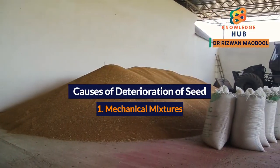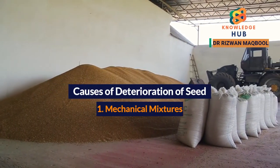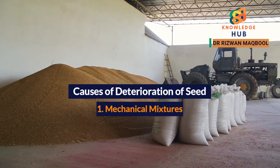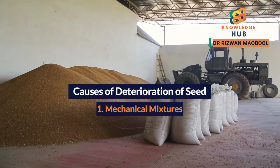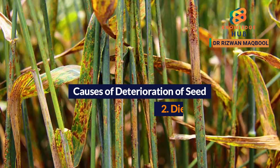Usually, the seed produce of all the varieties is kept on the same threshing floor, resulting in many varietal mixtures. Combining or threshing equipment is often contaminated with seeds of other varieties. Further, the gunny bags, seed bins, etc. are often contaminated with seeds of other varieties.